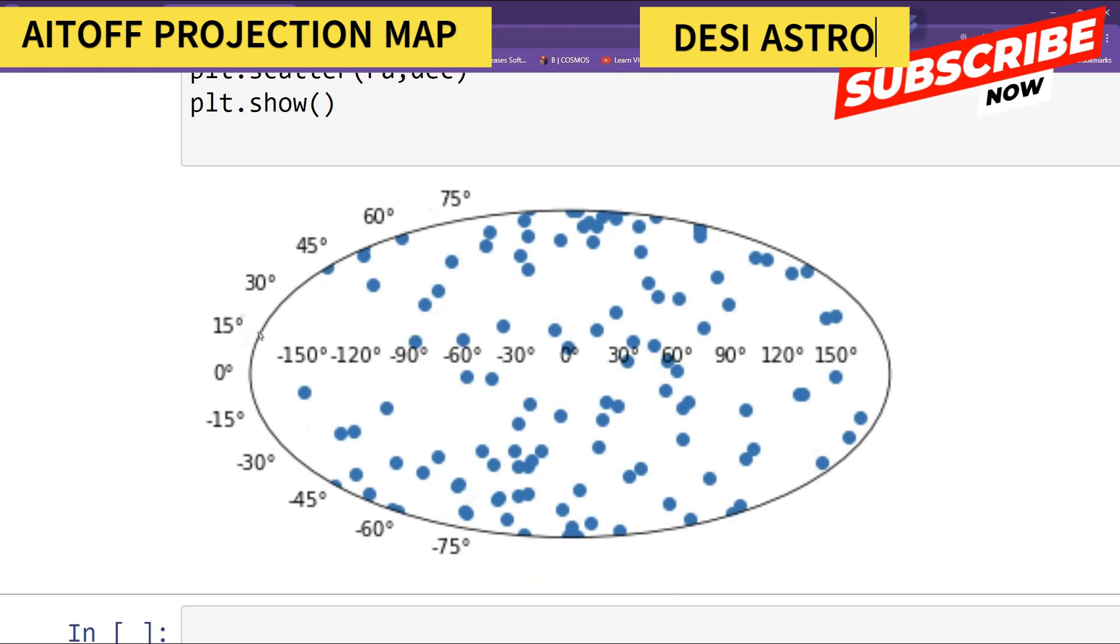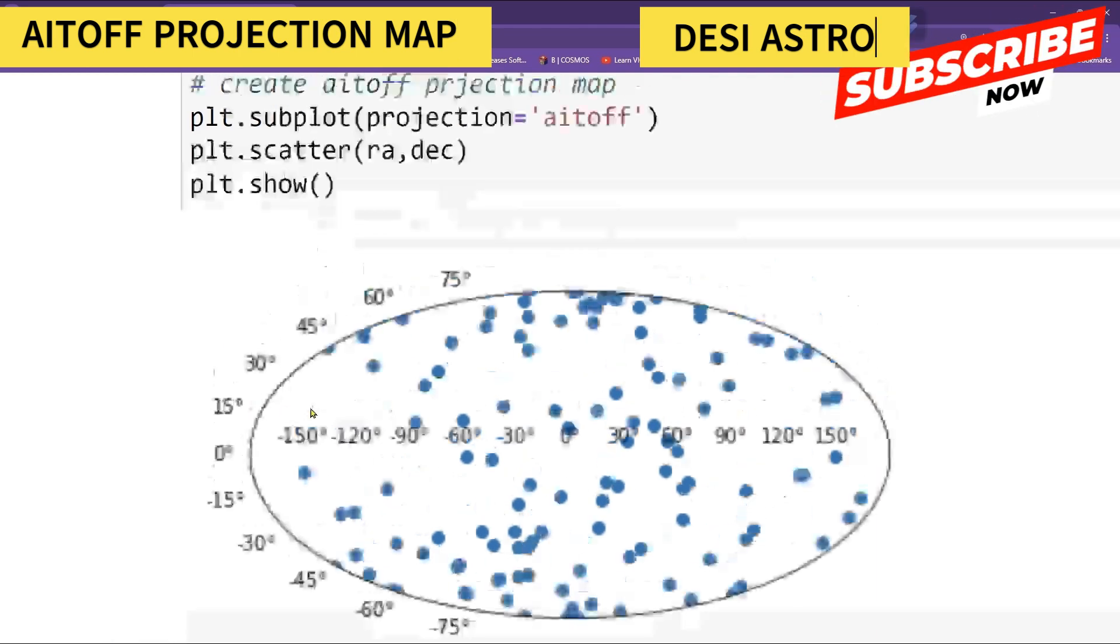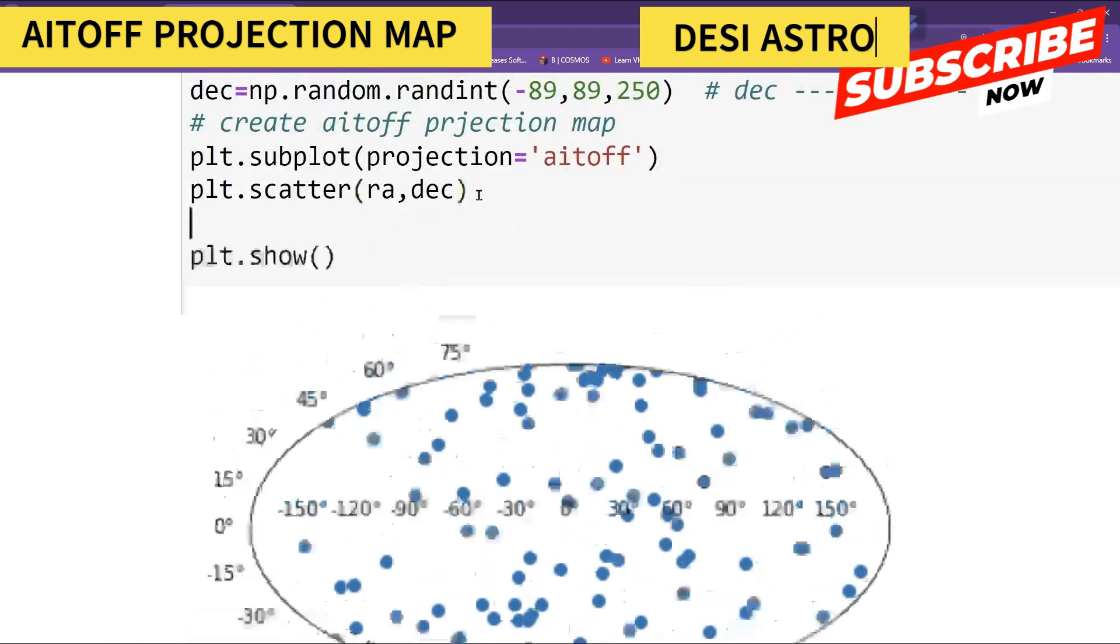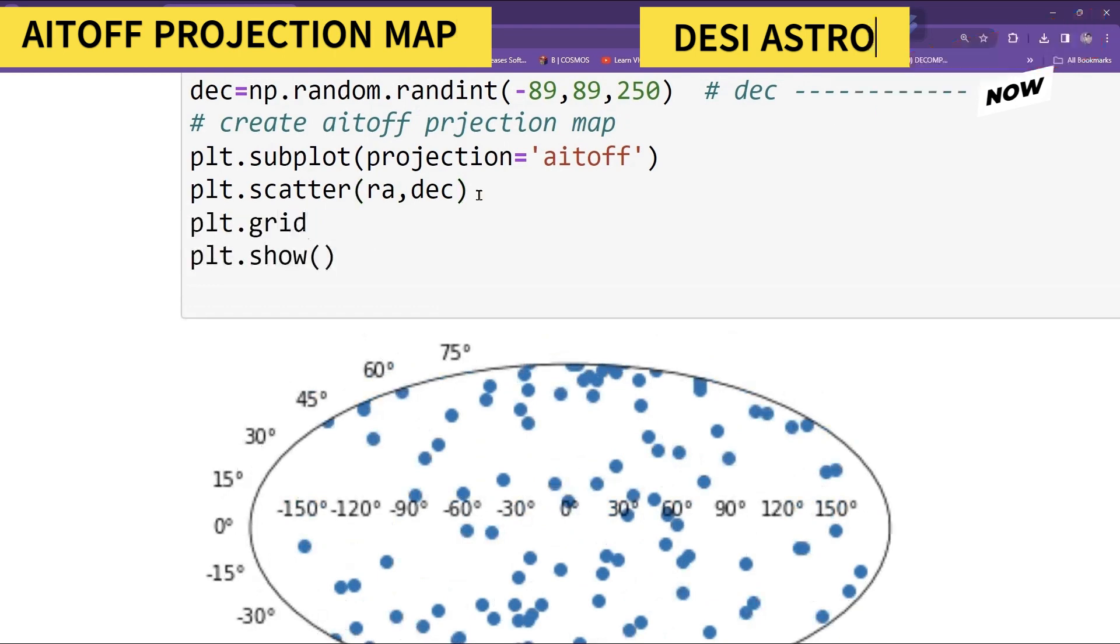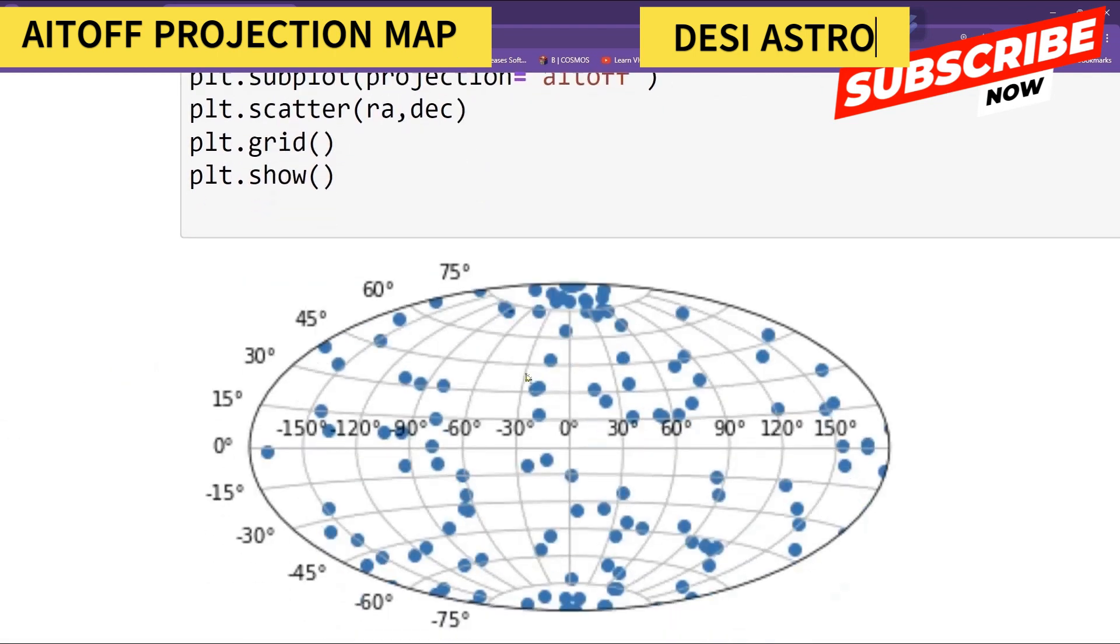This is 90 degrees and minus 90 degrees for northern and southern hemisphere. And this is your RA, right, from 0 to 180 degrees plus and minus. So you can also put the grid to visualize more. So plt.grid.